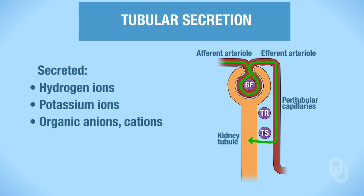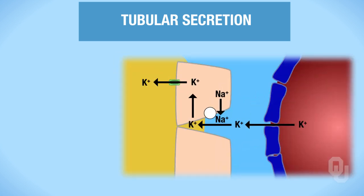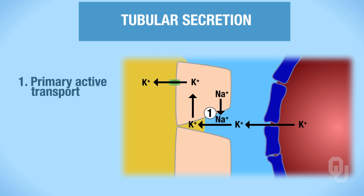Let's focus on potassium here for a moment. We're going to start where we always do—the basolateral membrane. We have primary active transport. Sodium is at a low concentration and potassium is at a high concentration inside the cell, while potassium is at a low concentration out in the interstitial fluid. So we want to reabsorb it—let's start out in the plasma.